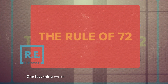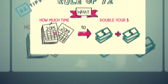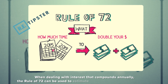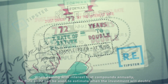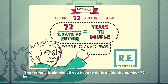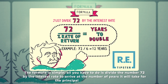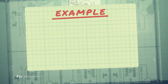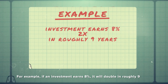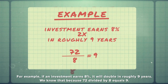One last thing worth mentioning related to compound interest is something called the rule of 72. When you're dealing with interest that compounds annually, the rule of 72 can be used to estimate when the investment will double. All you have to do is divide the number 72 by the interest rate to arrive at the number of years it will take for the principal amount to double. For example, if an investment earns 8%, it will double in roughly nine years — because 72 divided by 8 equals 9.